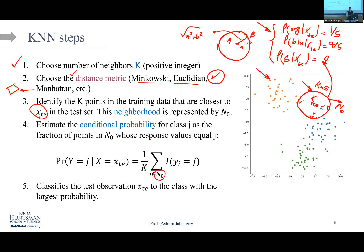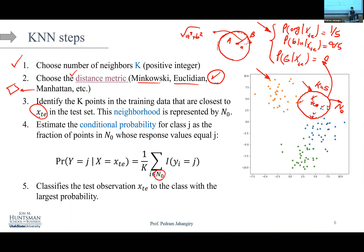What does having no functional form mean for interpretability? KNN has zero interpretability. There are no parameters — you can't say 'if I increase X by this amount, Y changes by that amount.' The only thing you can do with KNN is make predictions. KNN is not interpretable at all, but when it comes to predictability it is a surprisingly powerful model, especially for classification.